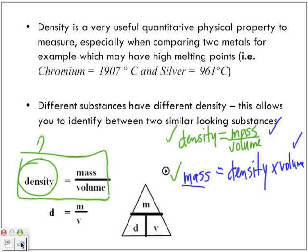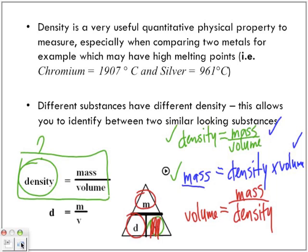But what happens if the question asks you to find the volume? We're trying to find the volume of an object. We cover up volume and we have mass on top of density. And there is your third equation. So we've been able to find density, we've been able to find mass, we've been able to find volume.